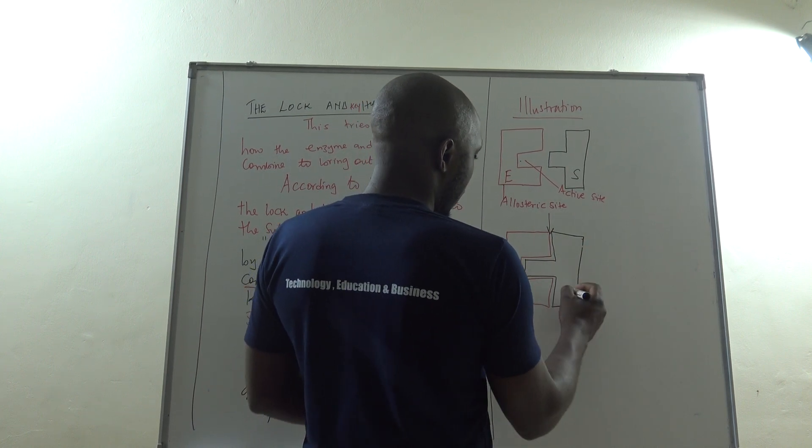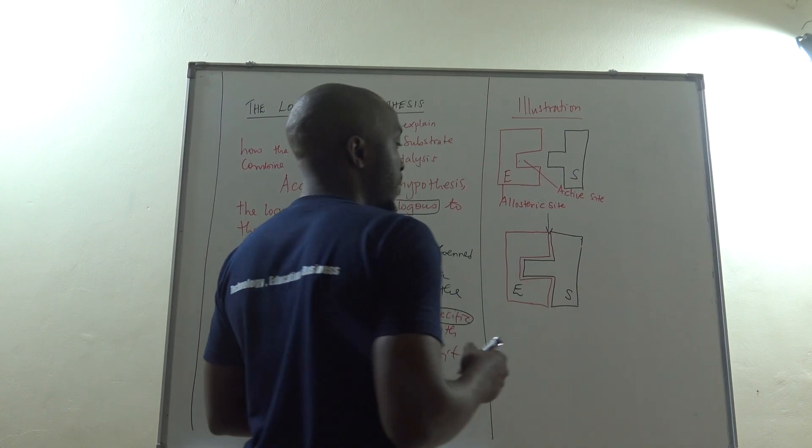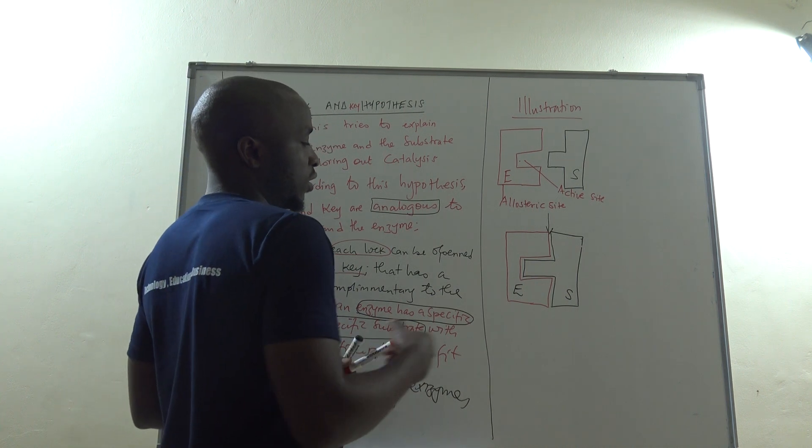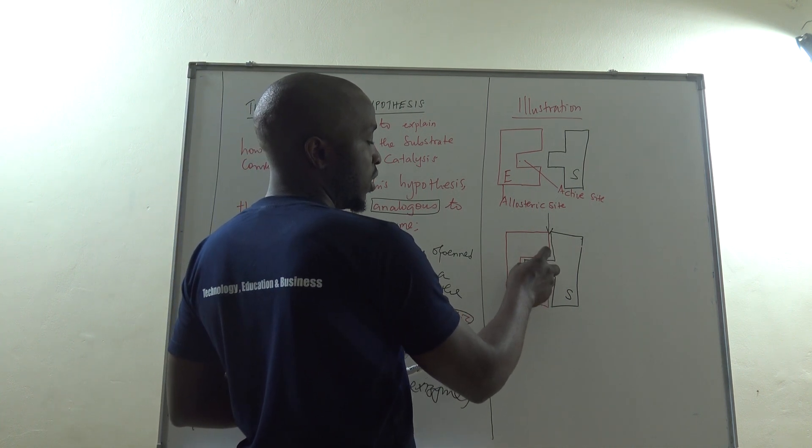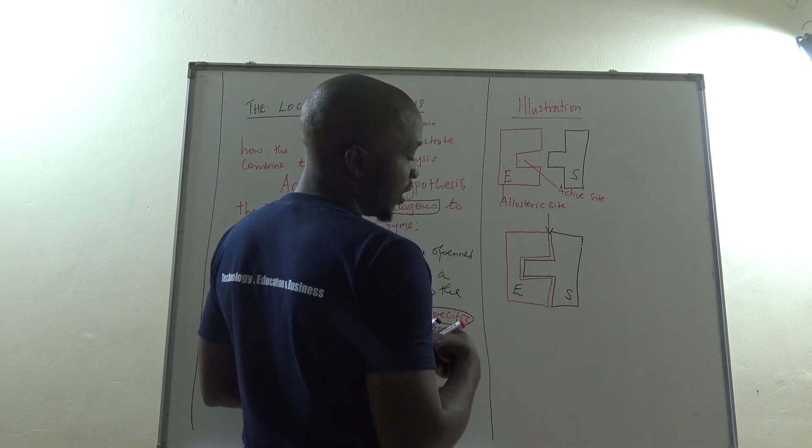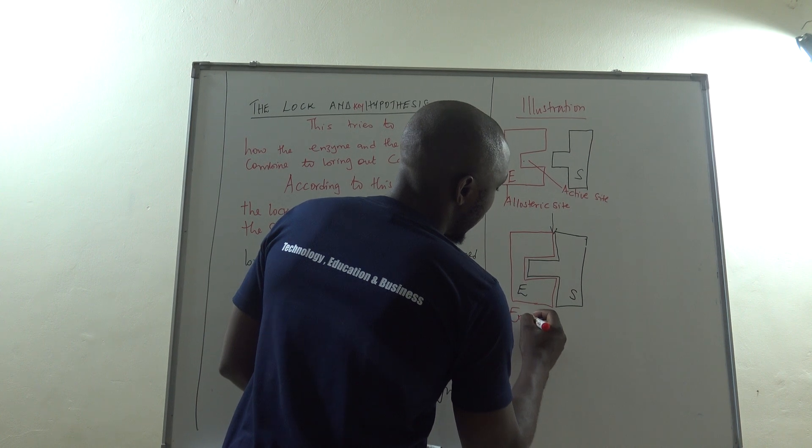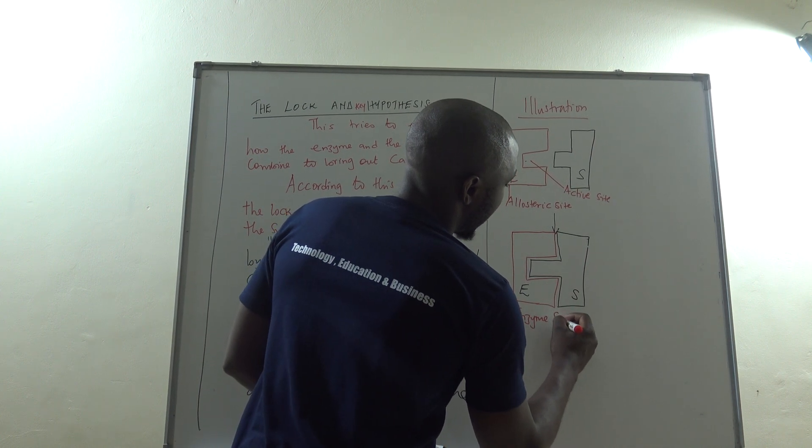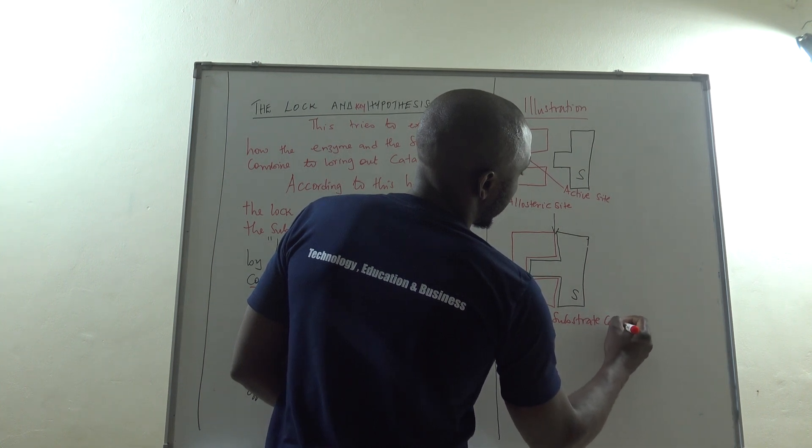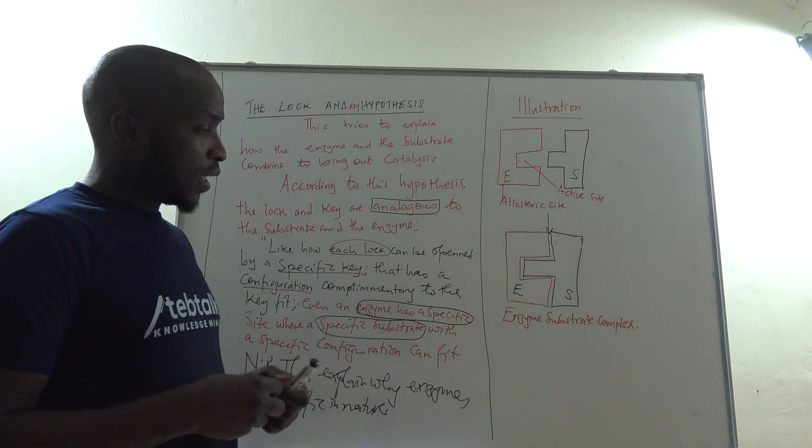So this is our substrate, that is our enzyme. When they meet, partial bonds are going to be established in that region where we have called it an active site. This we shall refer to as enzyme substrate complex.